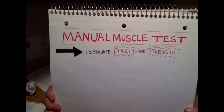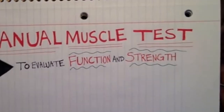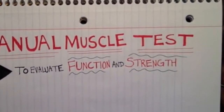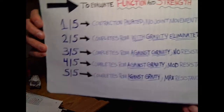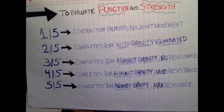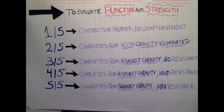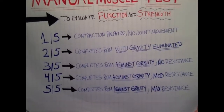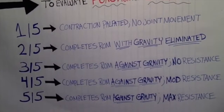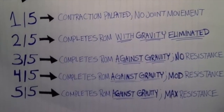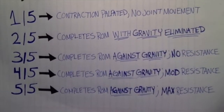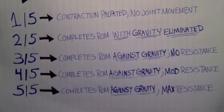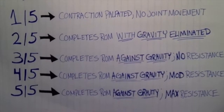A manual muscle test can be performed to evaluate function and strength, or test for weakness of the gluteus medius muscle. Manual muscle testing grades muscles based upon their ability to move in relation to gravity and resistance. Today, we will be focusing on exercises used to strengthen muscles that present with 2 out of 5 strength, meaning the patient cannot move the muscle against gravity, and 3 out of 5 strength, meaning the patient can complete the muscle's normal range of motion against gravity but with no resistance.